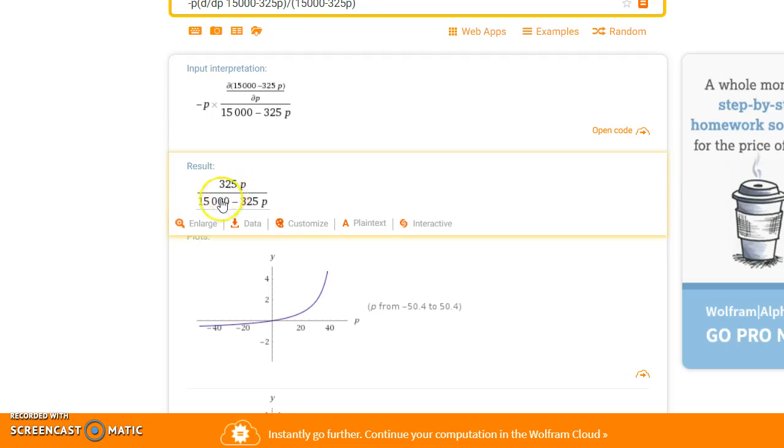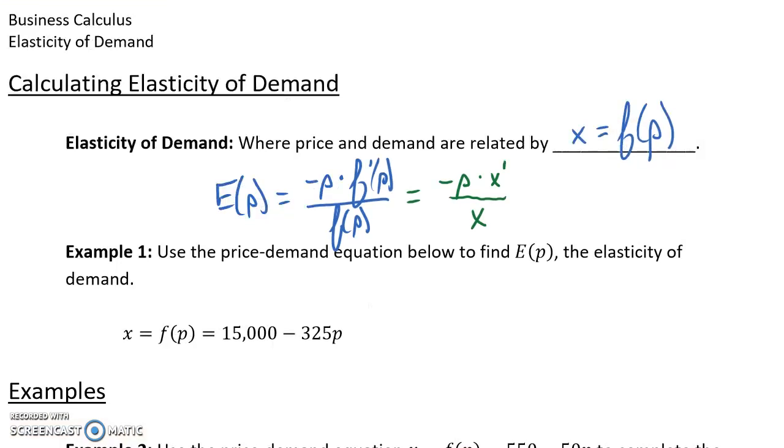And what we end up with then is this rational function. So in this case, our elasticity of demand function would be 325P over 15,000 minus 325P.